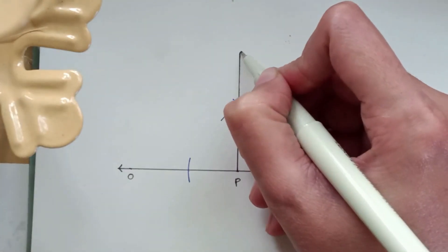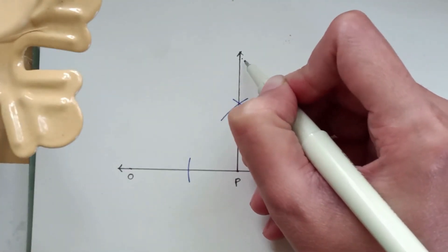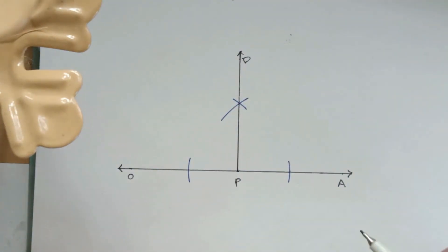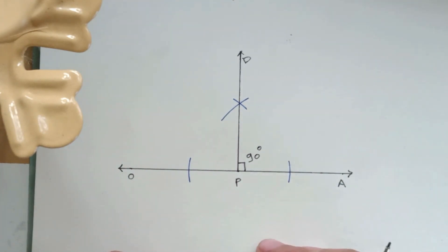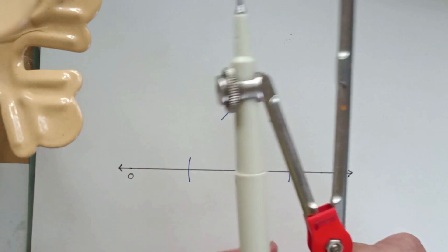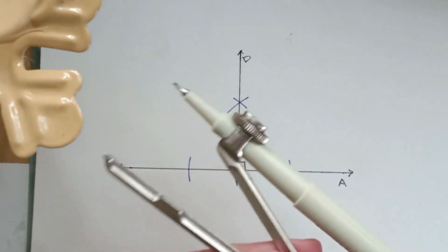That's it. Let's name this point as D. So PD is a line perpendicular to the line OA and this angle that we just made will be a 90 degree angle. So in this way you can draw a set of perpendicular lines with the help of just compass if you do not have a protractor.